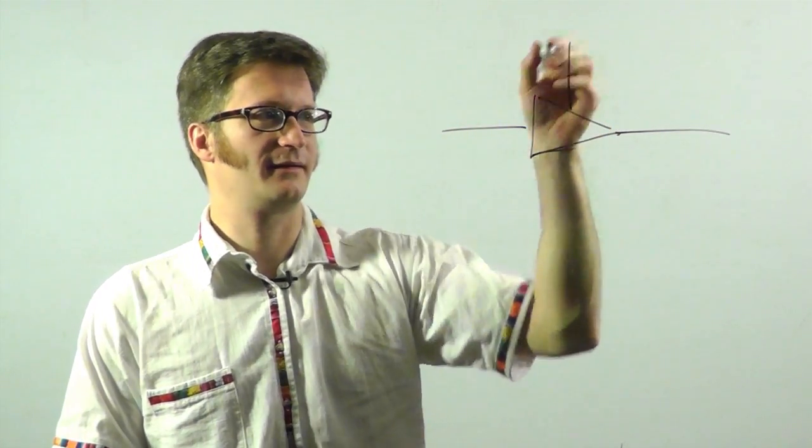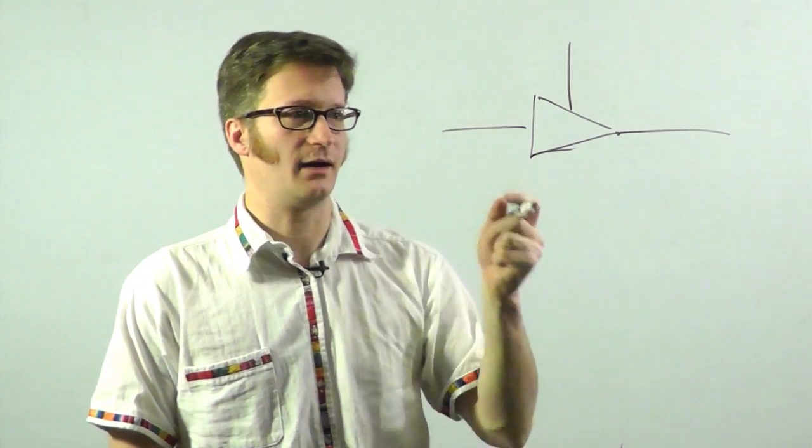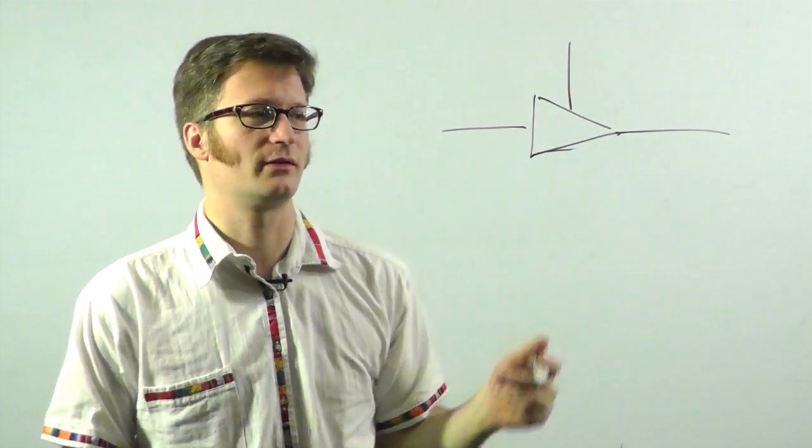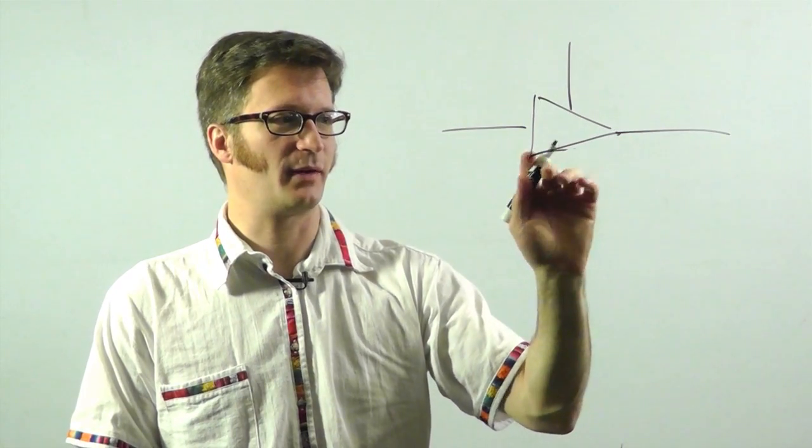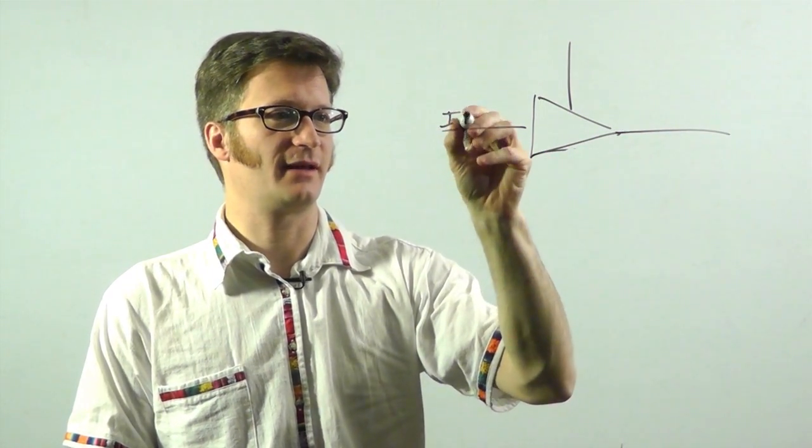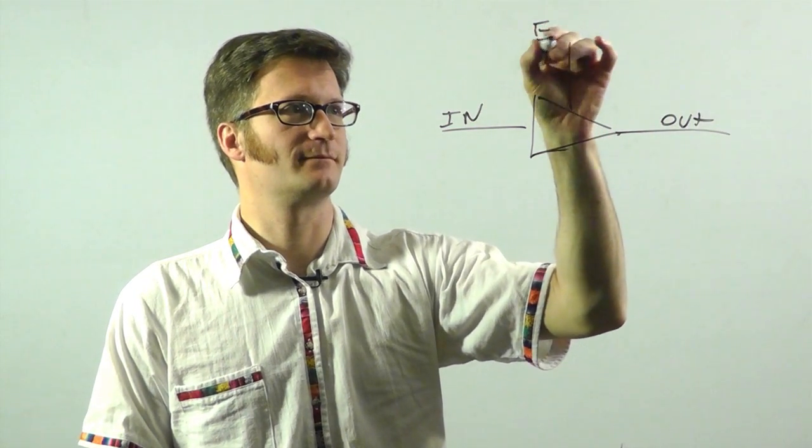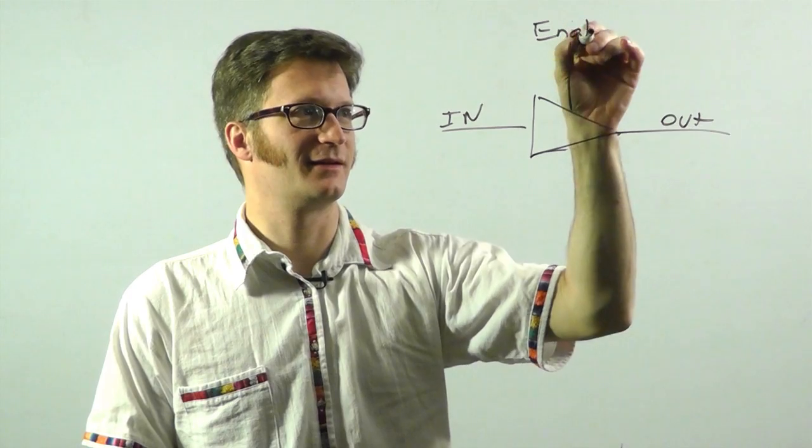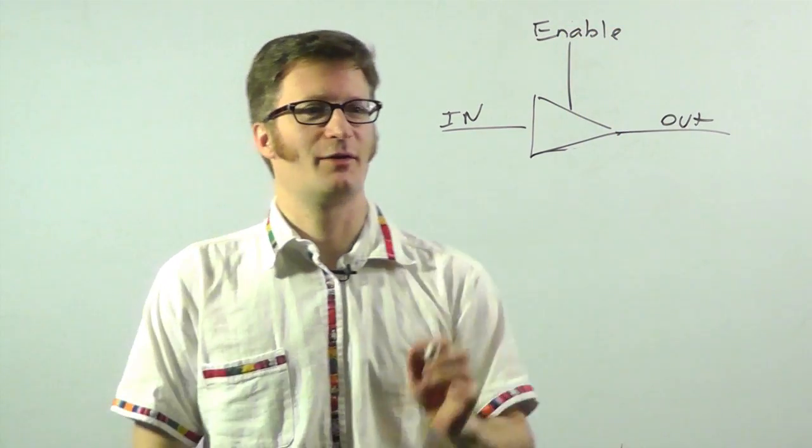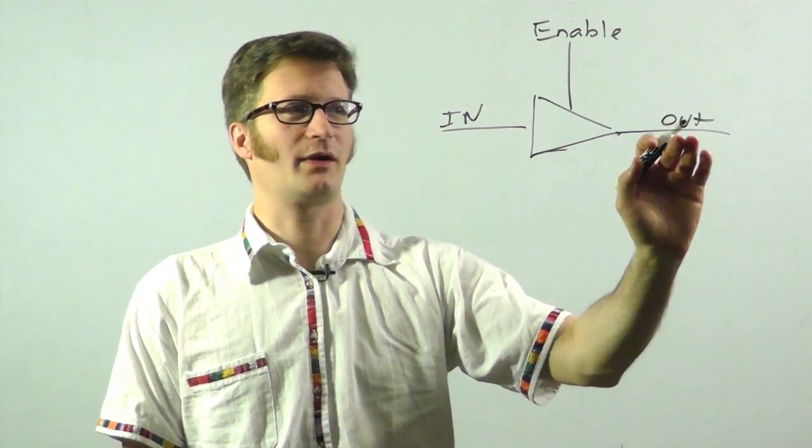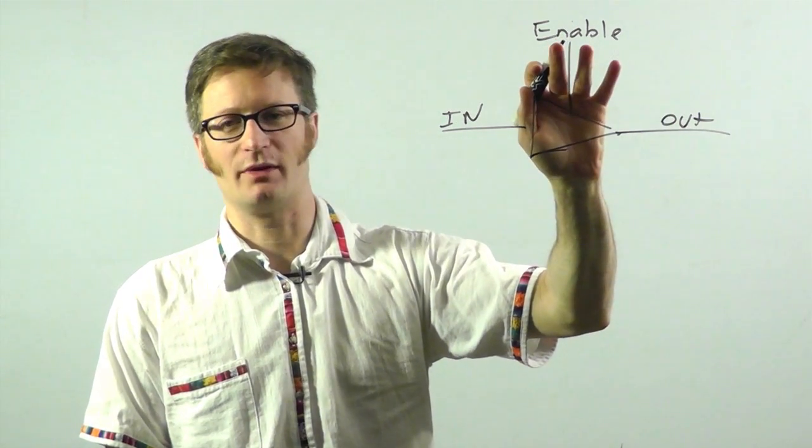A three-state gate would be any sort of gate. I'm going to draw a buffer here that has an enable input and output enable. So let's say for this buffer, what I have for the input is output on the output if enable is high.